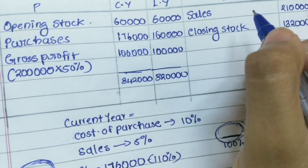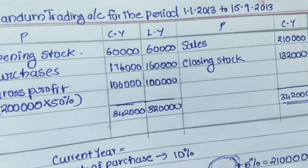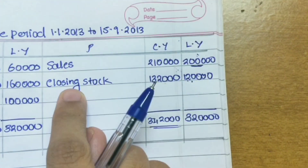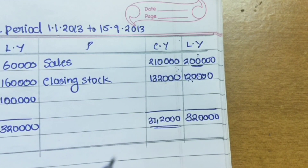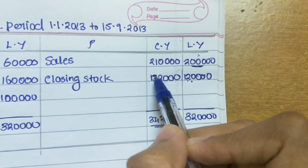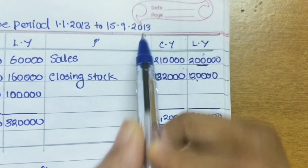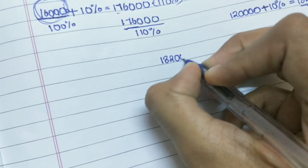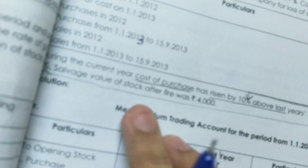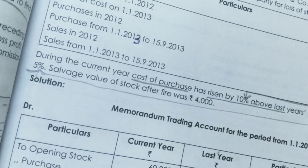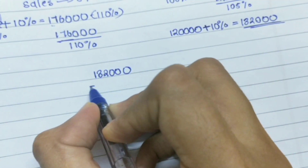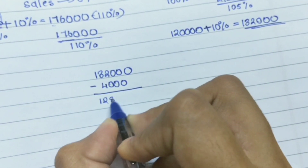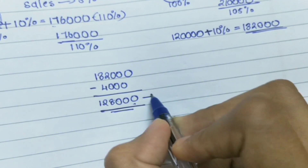We prepared the memorandum trading account in order to find the closing stock amount, so we can calculate the insurance claim. The closing stock was 1,32,000, meaning on September 15th 2013, before the fire, there was stock worth 1,32,000. They saved stock valued at 4,000, so we subtract: 1,32,000 − 4,000 = 1,28,000.